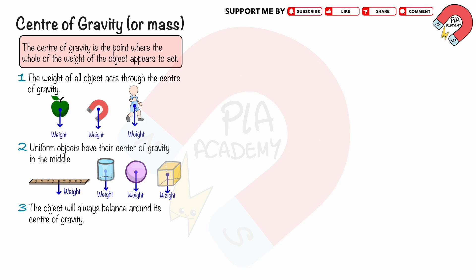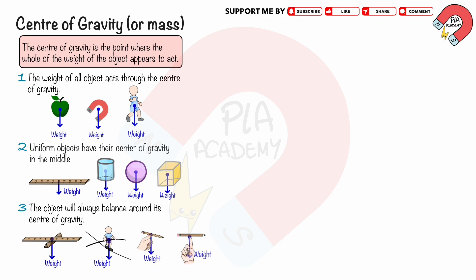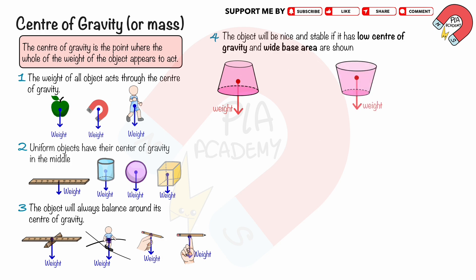The object will always balance around its center of gravity. The uniform meter rule can be balanced at the 50 centimeter mark. A person walking on a rope and a pencil balanced on a finger also illustrate this. An object will be stable if it has a low center of gravity and a wide base area.